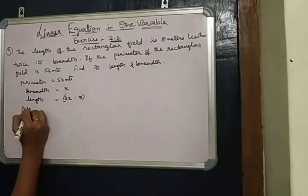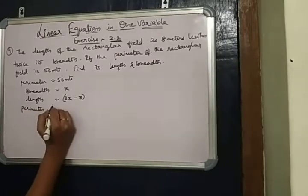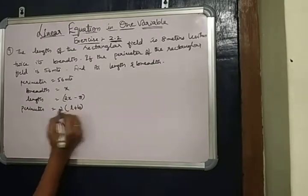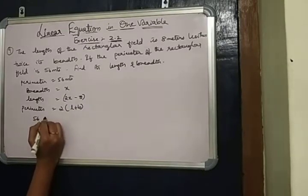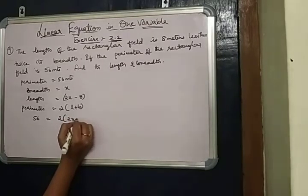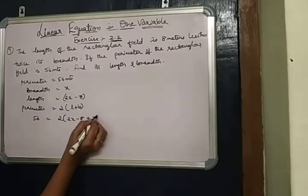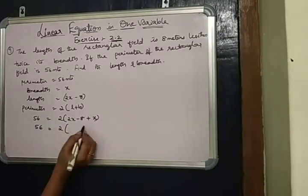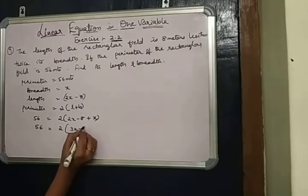The perimeter of a rectangle formula is, perimeter is equal to 2 into length plus breadth. The given perimeter 56 is equal to 2 into length is 2x minus 8 plus breadth is x. 56 is equal to 2 times 2x plus x, which is 3x minus 8.